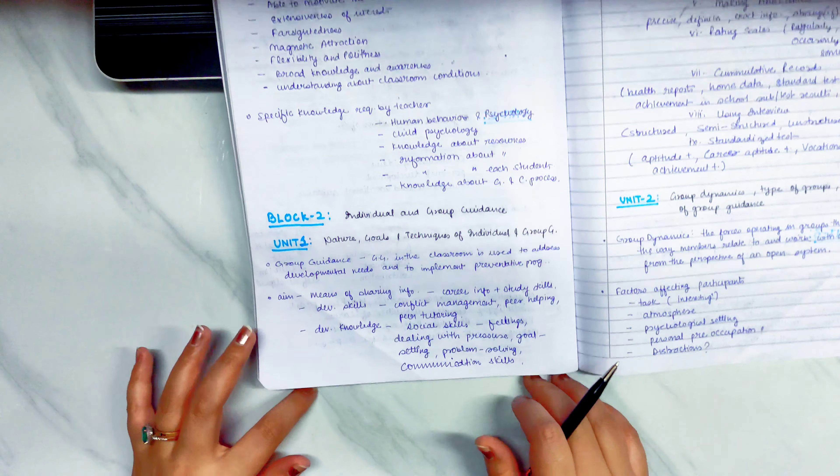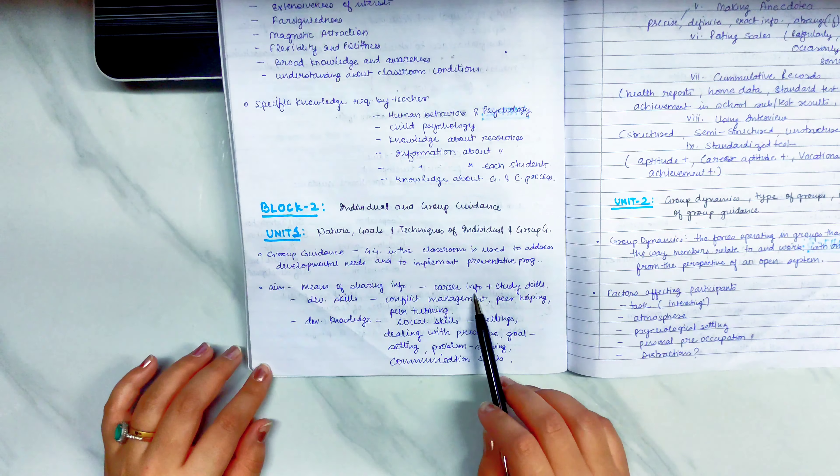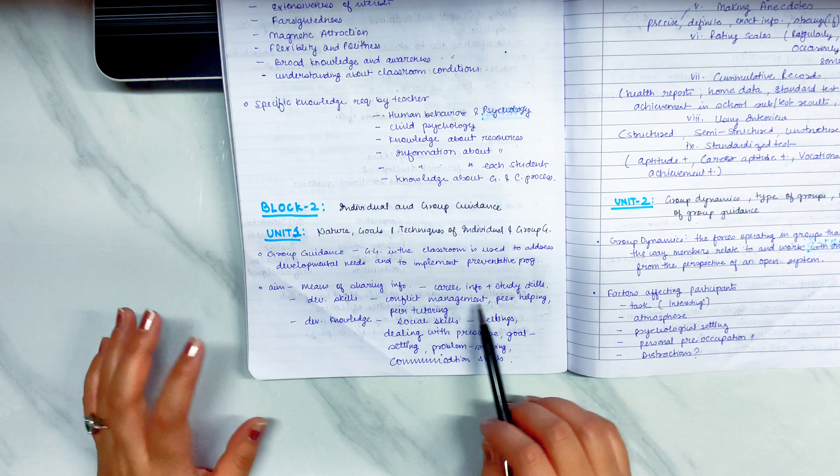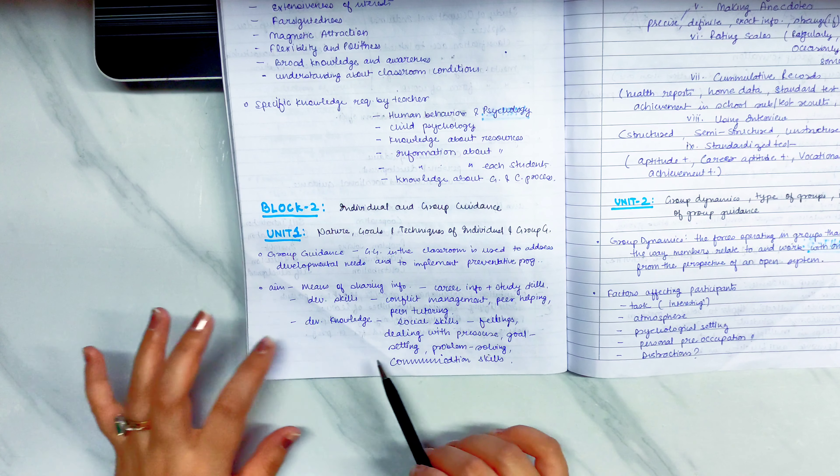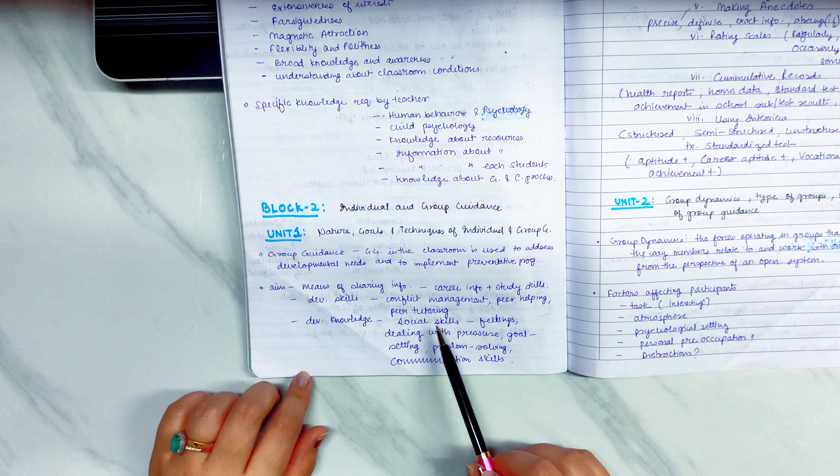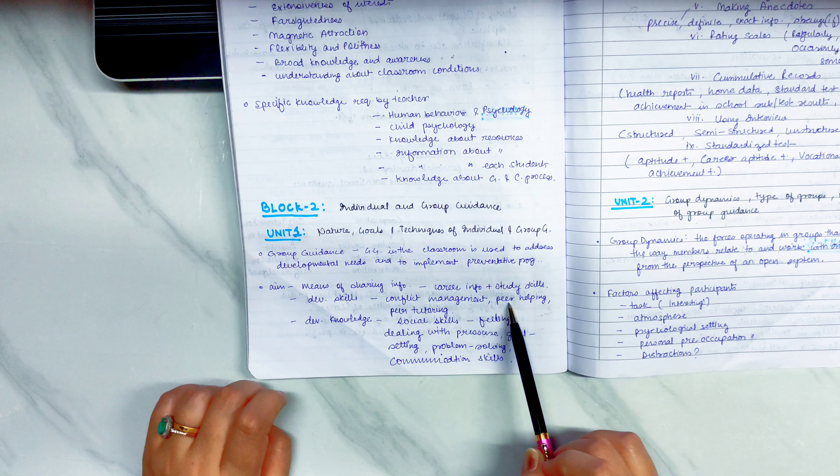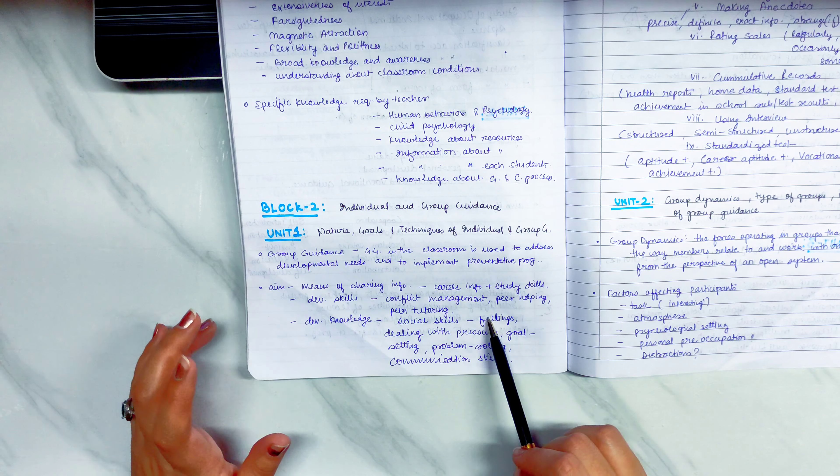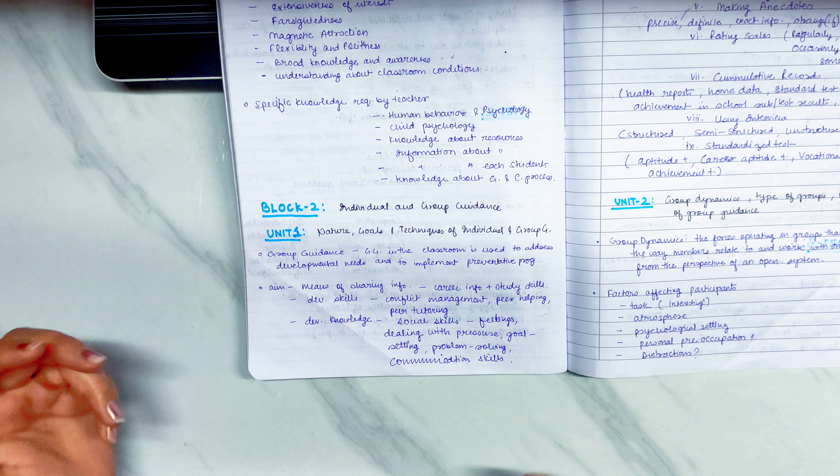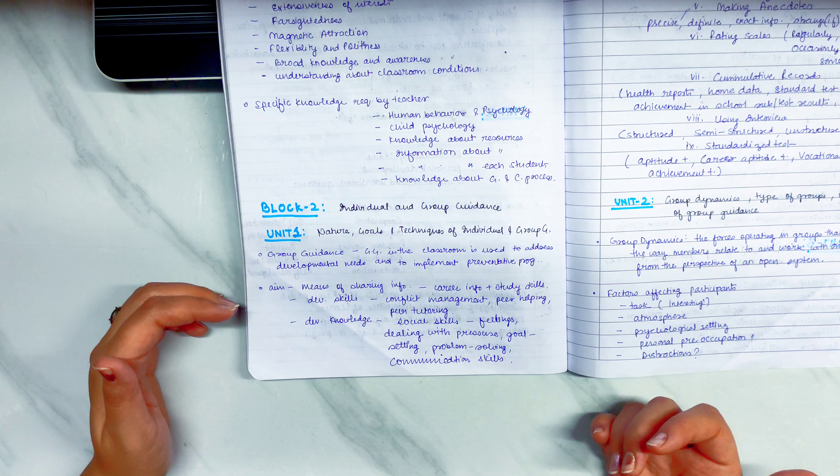If you are giving them career info, you can create a group because this is a common topic. After that, you can tell them how conflict management can be, peer help, peer tutoring, so that you can share what you can share or better understand.